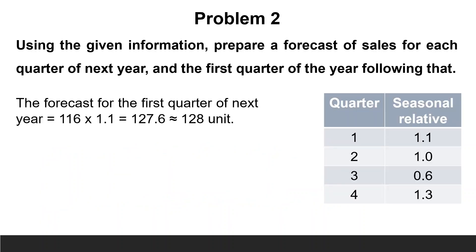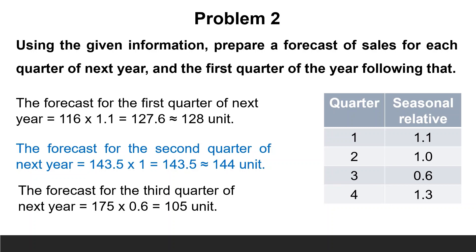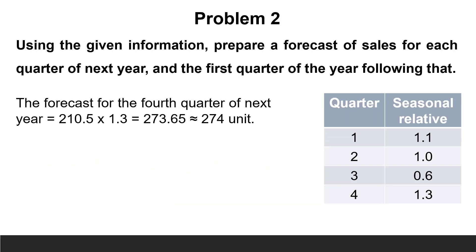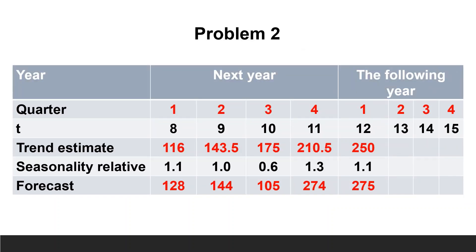Now, using the given seasonality relatives: the forecast for the first quarter of next year equals 116 multiplied by 1.1, equals approximately 128 units. The second quarter equals 143.5 multiplied by 1.0, equals approximately 144 units. The third quarter equals 175 multiplied by 0.6, equals 105 units. The fourth quarter equals 210.5 multiplied by 1.3, equals approximately 274 units. The first quarter of the following year equals 250 multiplied by 1.1, equals 275 units. The summary of the answer is illustrated in this table.